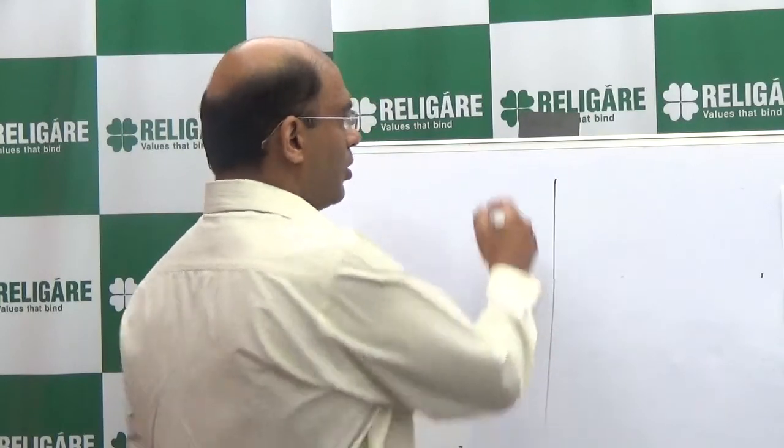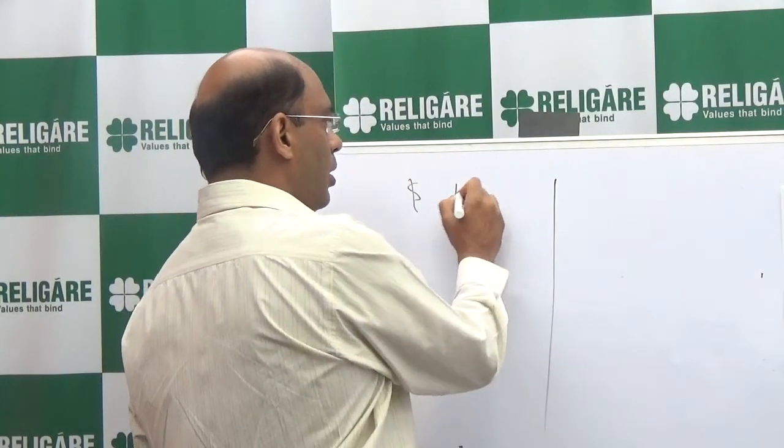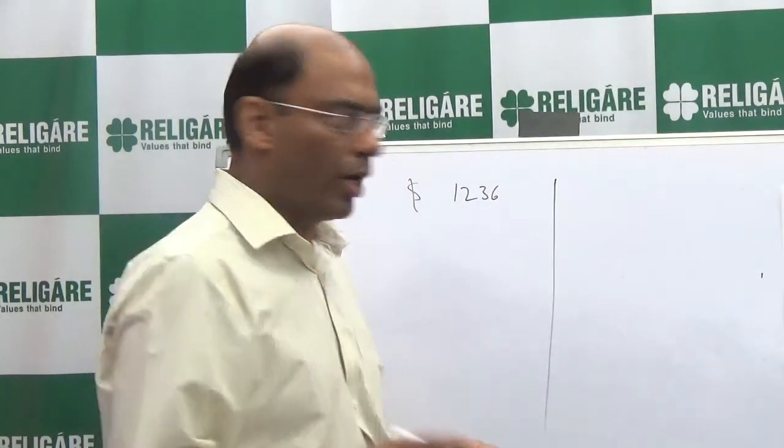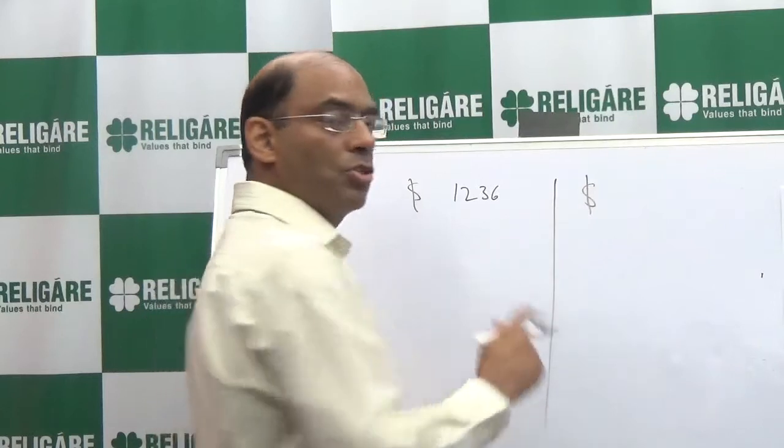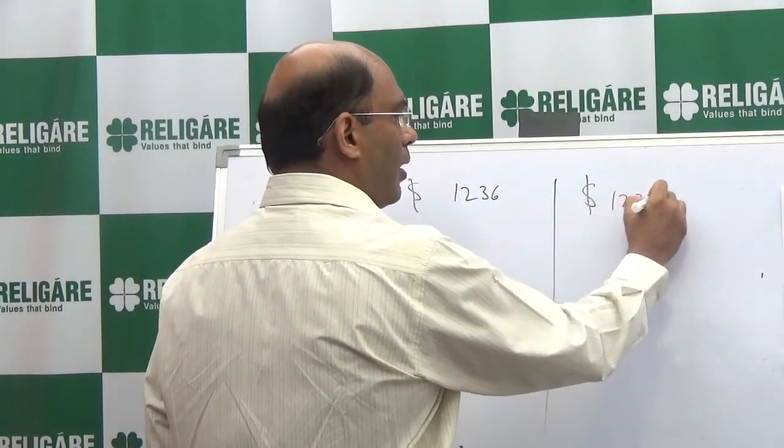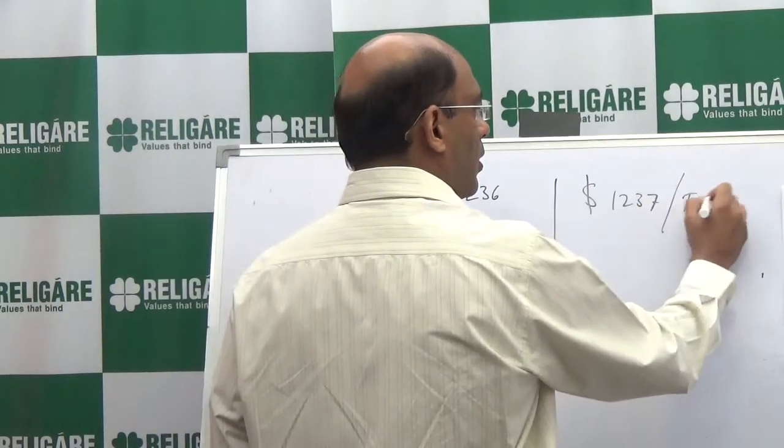Let us take an example. Assume that gold is $1,236 per troy ounce. One troy ounce is approximately 31.1 grams. If we consider the dollar price of gold changing, we will keep the rupee conversion constant — 61.1 rupees to one dollar. This side shows the price at $1,236 per troy ounce, and this side shows when the price changes by one dollar to $1,237 per troy ounce.